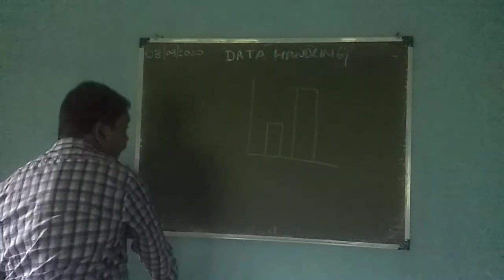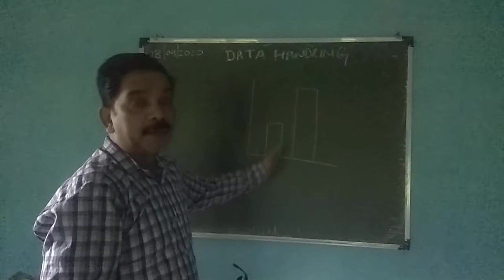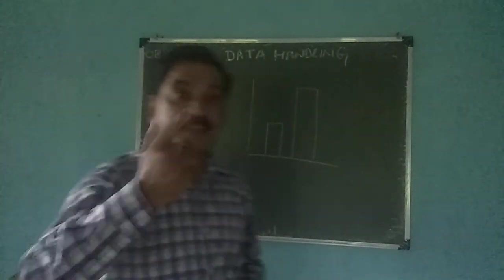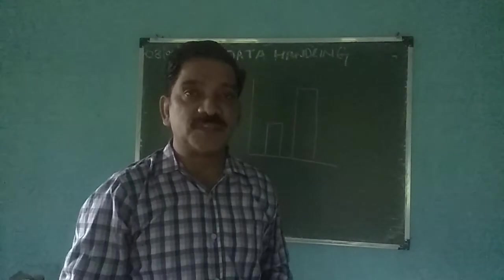So we have to do question number two by this way by drawing the bar graph. The very first thing we'll do is we'll make the table. That is called frequency distribution table.